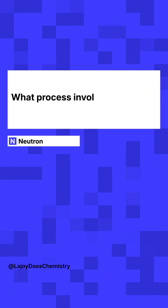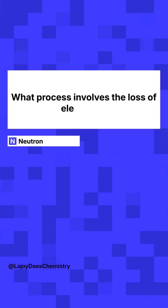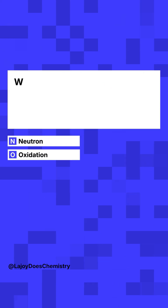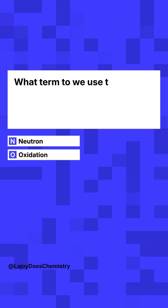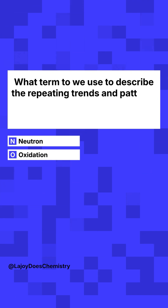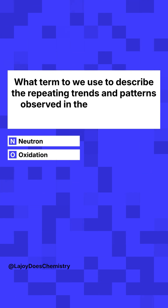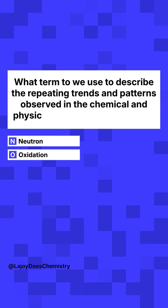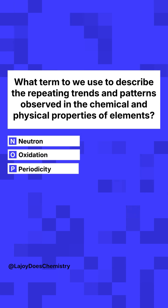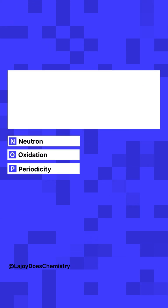O. What process involves the loss of electrons? Oxidation. P. What term do we use to describe the repeating trends and patterns observed in the chemical and physical properties of elements? Periodicity.